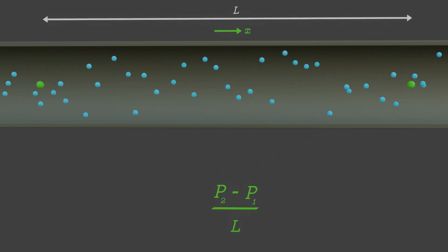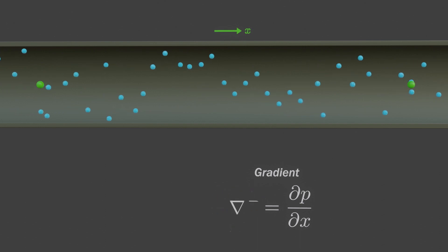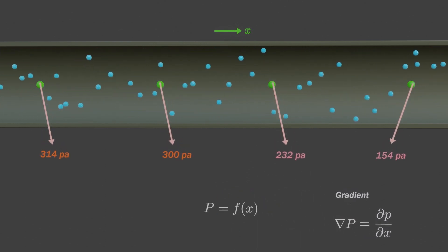Now again consider water flowing through this pipe. Fluid particles always flow from higher pressure to lower pressure. Here water is flowing towards positive x direction, so the pressure at left side must be higher than pressure at right side. This difference in pressure along the length of pipe creates pressure gradient. As pressure is function of position, pressure gradient exists.